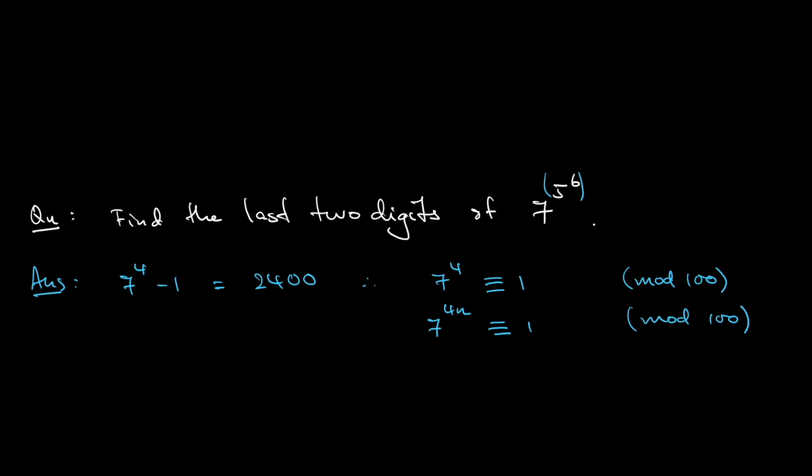So now remember our main point is we want to find 7 to the power of 5 to the power of 6. Okay, so I need to know that 5 to the power of 6, what is it modulo 4?